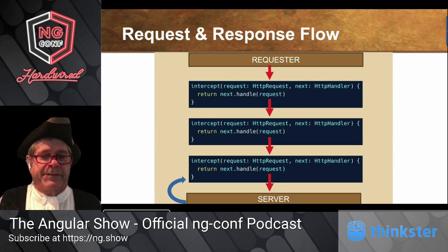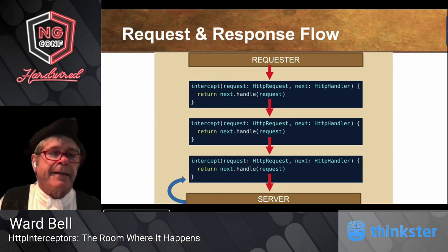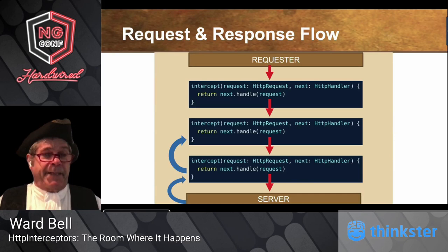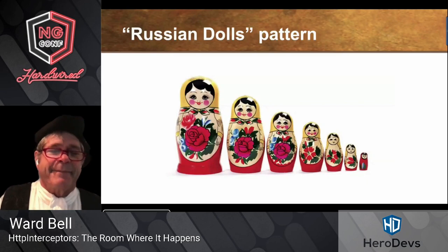The server does whatever it wants and sends it back to the first interceptor — the one closest to the server — which goes through whatever piping you had in mind, because it's an observable you're just extending. That pops back up to the next interceptor, then the next, and eventually your observable ends up back at the requester.